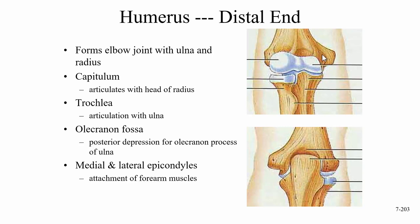These epicondyles are attachment points for forearm muscles, and they can become irritated. Medial epicondylitis is known as golfer's elbow (also baseball elbow), and lateral epicondylitis is known as tennis elbow.